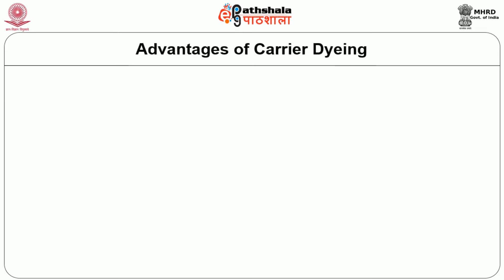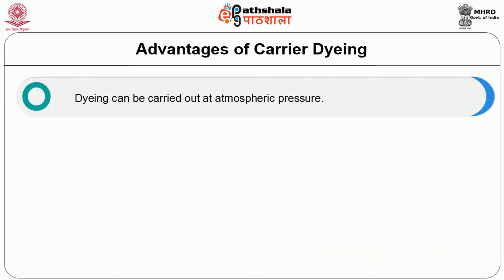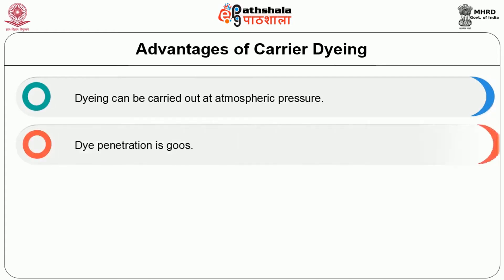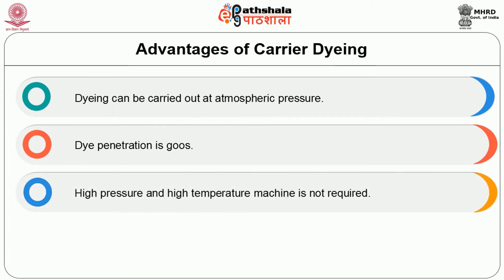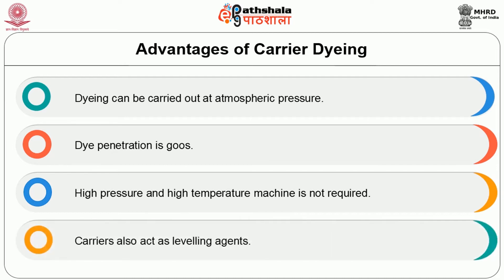Advantages of carrier dyeing: dyeing can be carried out at atmospheric pressure and dye penetration is good. High-pressure and high-temperature machinery is not required — normal jiggers and winches can be used. Carriers also act as levelling agents, so apart from swelling, levelling is also taken care of. This is a simple method to dye polyester.